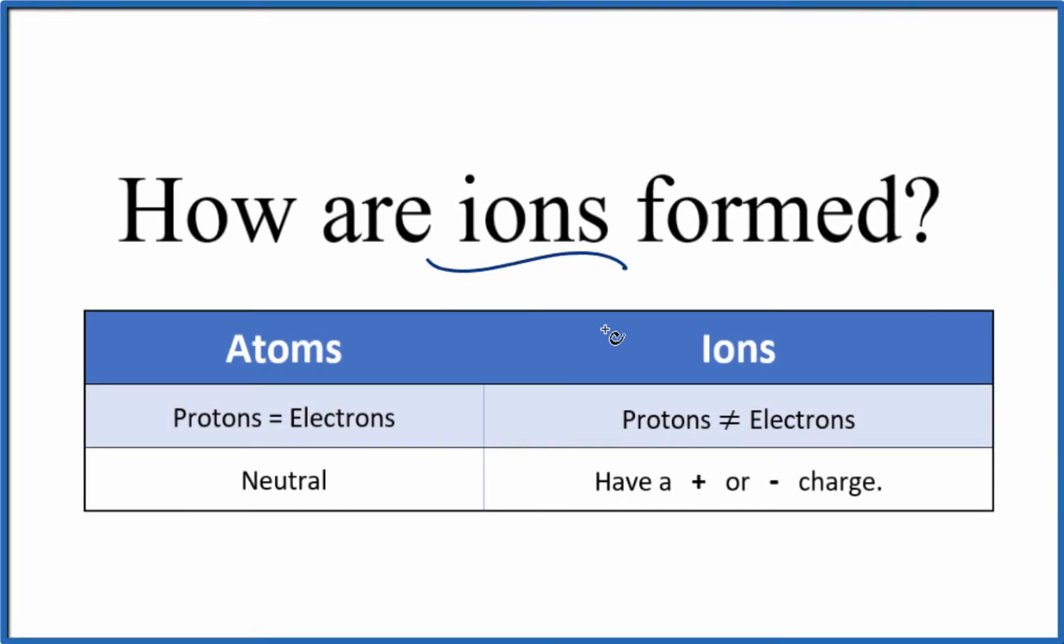Let's take a look at how ions are formed. So when you look at the periodic table, all of the atoms on the periodic table are neutral.